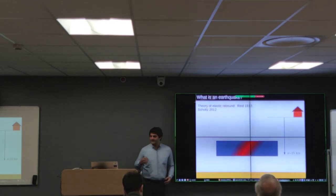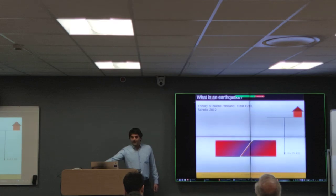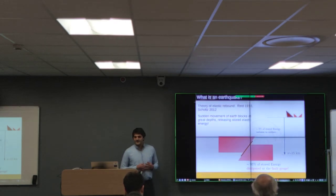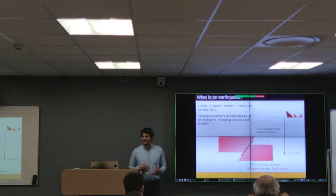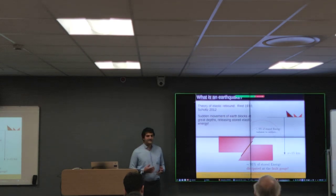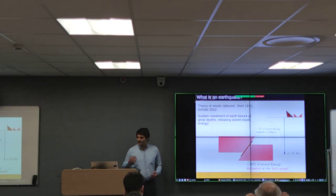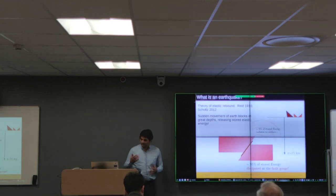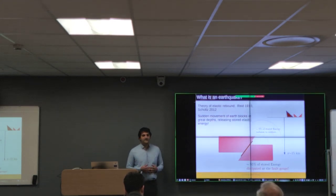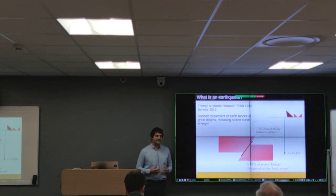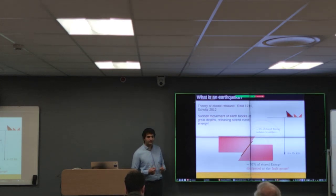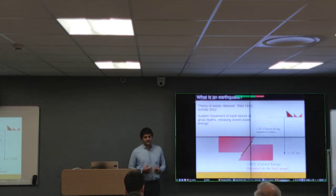What is an earthquake? According to the theory of the elastic rebound, an earthquake is the sudden movement of Earth blocks at great depths, releasing the stored elastic energy. The elastic energy is released — 5% of it to the surface in the form of seismic waves, while the rest, 95%, is accumulated inside the smaller region of the fault called the fault core.